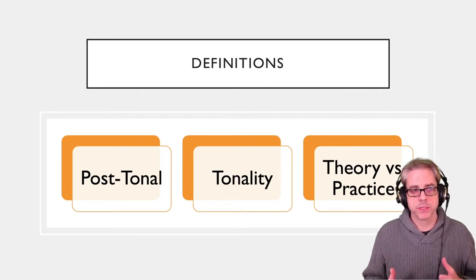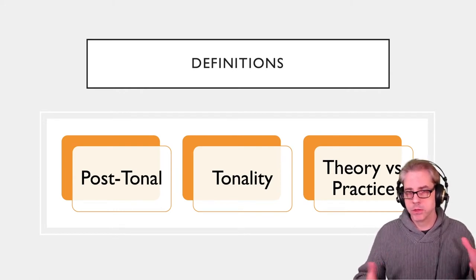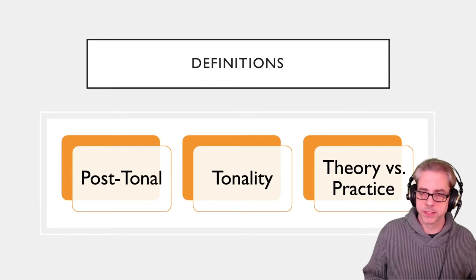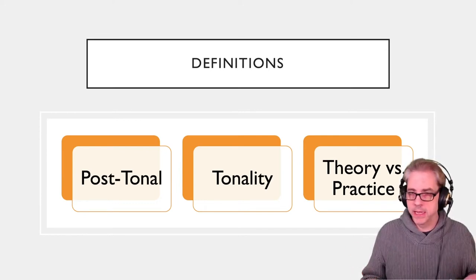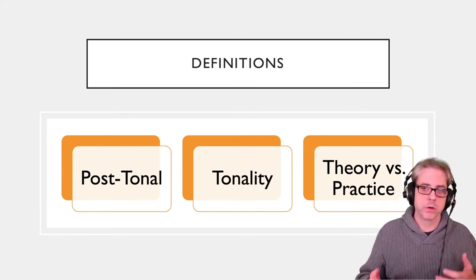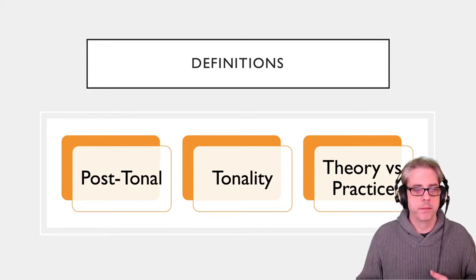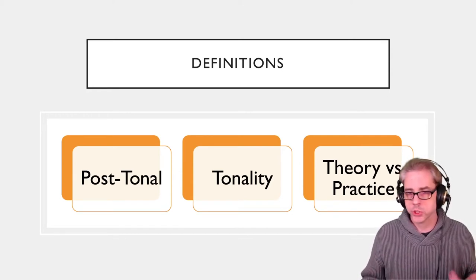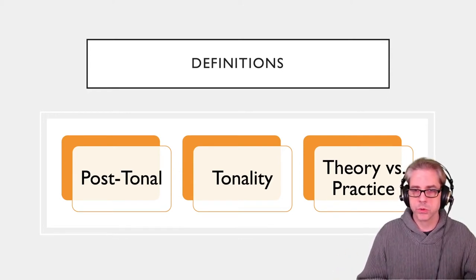In other words, 18th and 19th century common tonal practice. That can include, obviously, atonal music or non-tonal music — Schoenberg, Berg, the Second Viennese School, that sort of stuff.